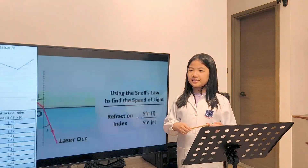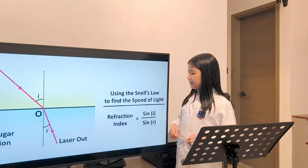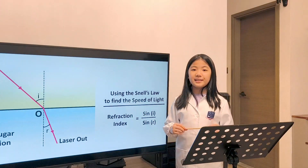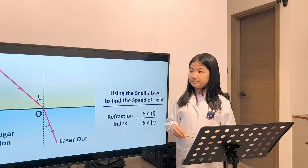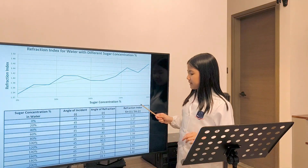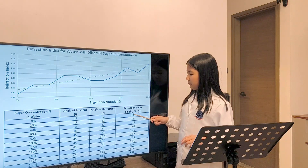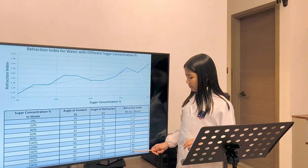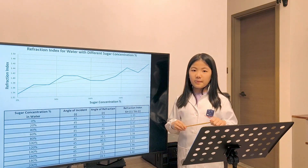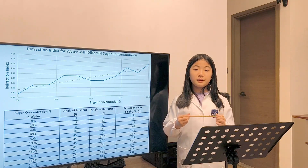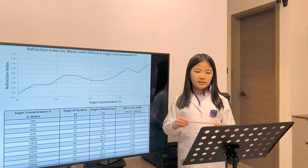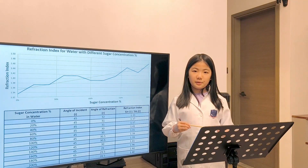By using Snell's law, we have found out the refraction index and the speed of light traveling in the medium. The refraction index has increased from 1.33 to 1.48, and that is an 11% increase. And that means at 200% sugar concentration, the light traveling in the water is 11% slower.